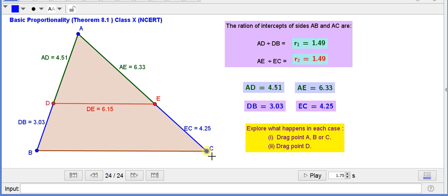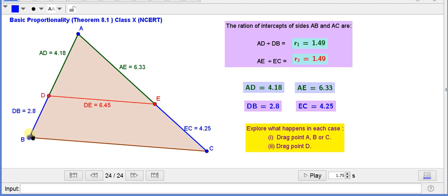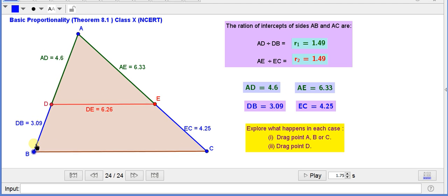Now, if we will drag point B, we see the value of AD and DB are changing, the ratio does not change.